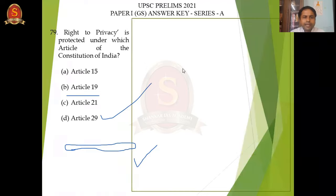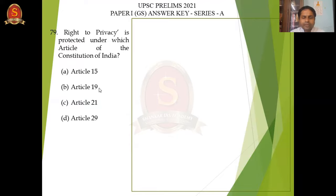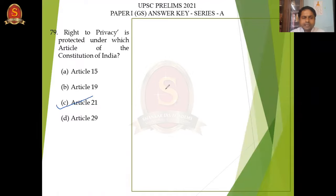Next: right to privacy is protected under which article of the Constitution of India? Article 15 talks about right against discrimination; Article 19 talks about freedom of speech and expression. The court has declared in various cases that right to privacy is a fundamental right under Article 21. This has been in current affairs regularly — for example, the IT rules framed in 2021, which they said effectively violated the right to privacy. So Article 21 is the right answer.